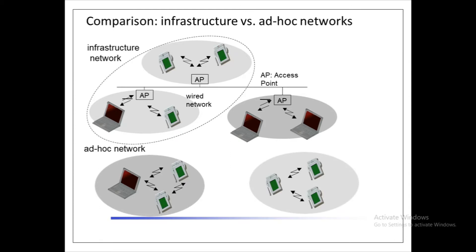The access point does not just control medium access but also acts as a bridge to other wireless or wired networks. The access point is represented as AP. The figure shows three access points — one, two, and three — each with their own wireless networks, along with a wired network.